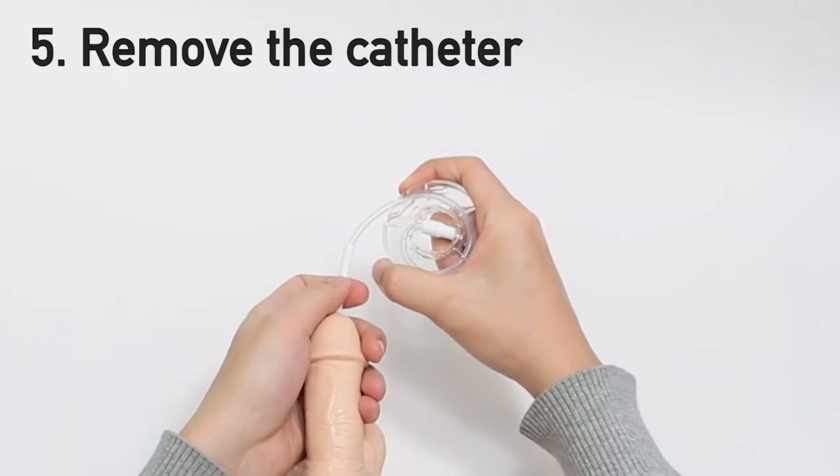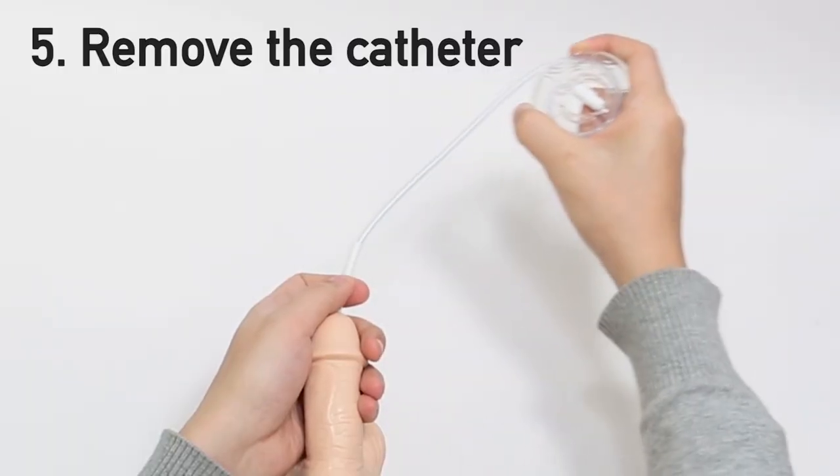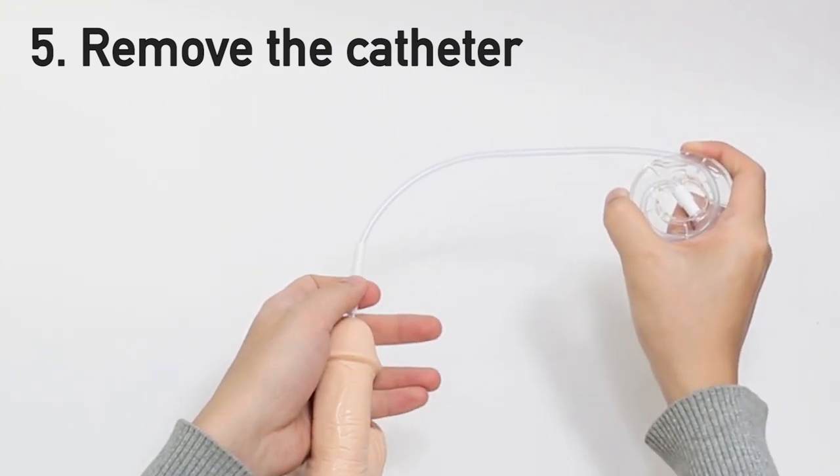Once the bladder is empty and you're done draining, slowly remove the catheter from the urethra.